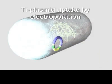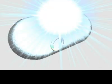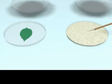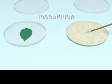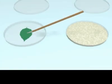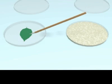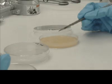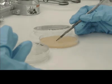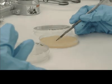Since agrobacterium-mediated transformation is a binary system, the Ti plasmid must then be inserted into agrobacterium using electroporation, sonication, heat shock, or some other method.